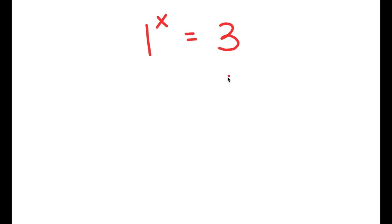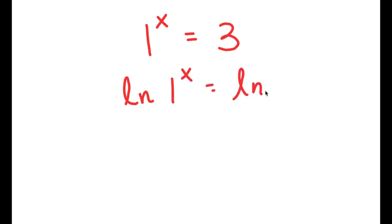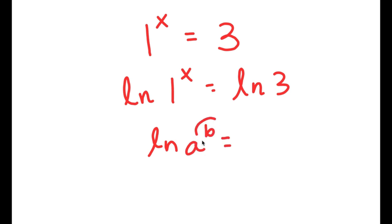Well, let's try to solve this equation the way we would solve any other exponential equation. The first thing I would do is take the natural log, or ln, on both sides. So I get ln of 1 to the power of x is equal to ln 3. Now, if I have something in the form ln(a) to the power of b, I can move this exponent b to the front, so this is going to equal b times ln(a).